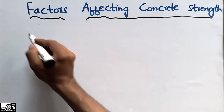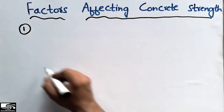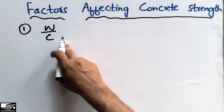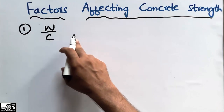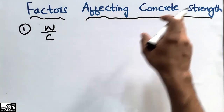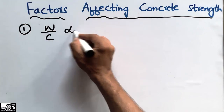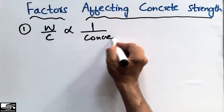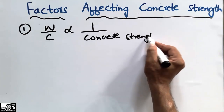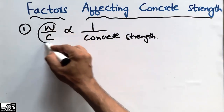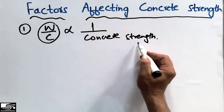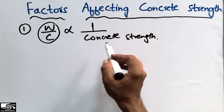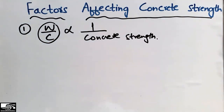The first factor which affects concrete strength is the water-cement ratio. It should be kept in mind that the water-cement ratio is the main key that plays a role in affecting the concrete strength. The water-cement ratio has an inverse relation with the concrete strength, meaning that if we increase the water-cement ratio, the concrete strength decreases, and if we decrease this ratio, the concrete strength increases.